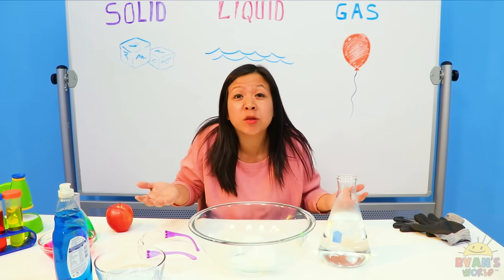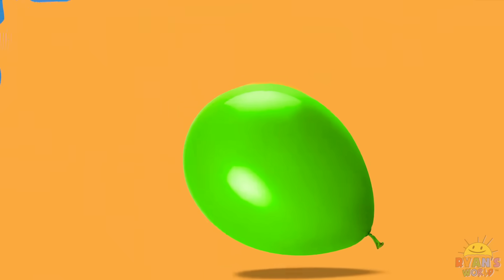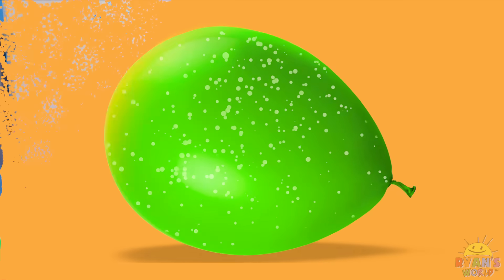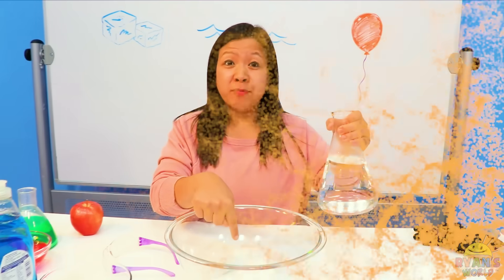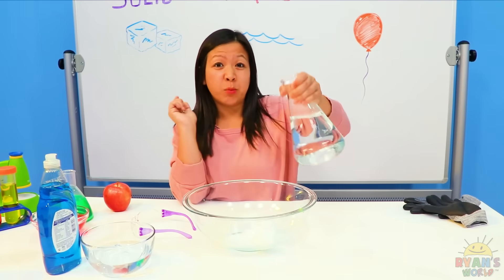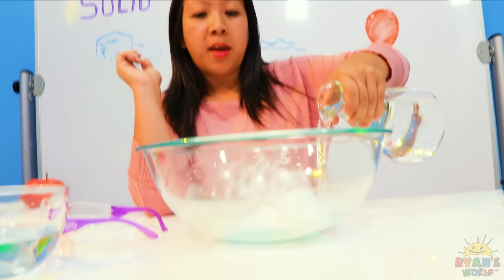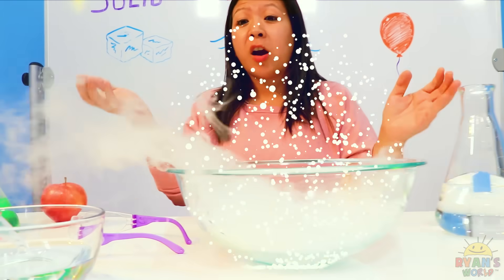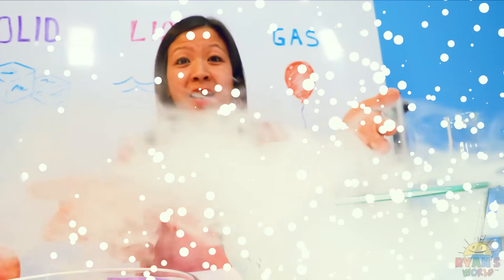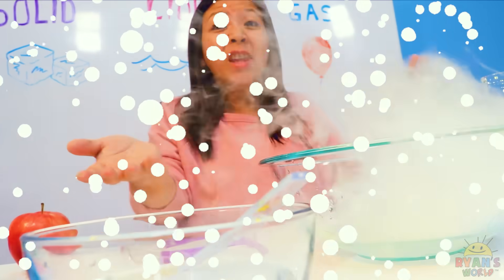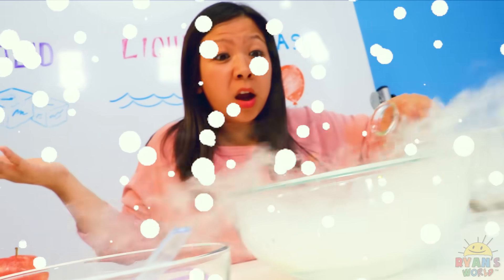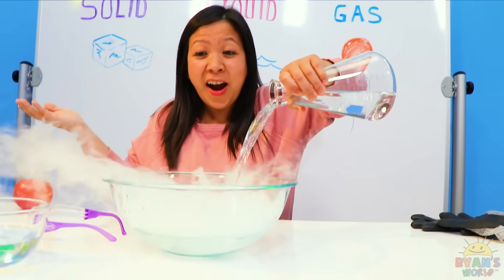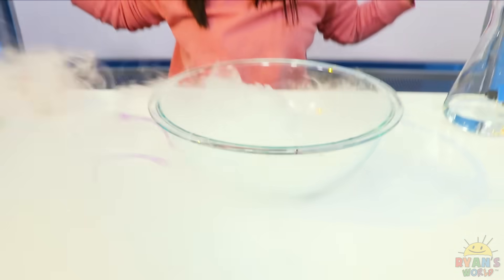Gas have particles that are so loose, they have no definite shape or volume. So I have dry ice, and I'm going to mix it in with water. And look, it produces carbon dioxide gas. It just goes everywhere, filling up the whole room. Whoa! Look at the gas flow!